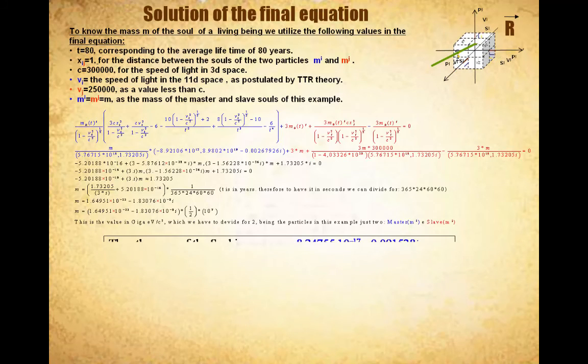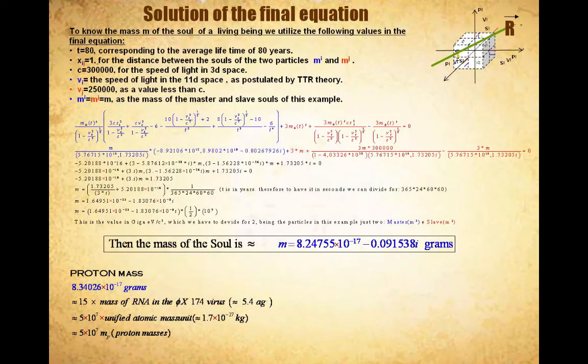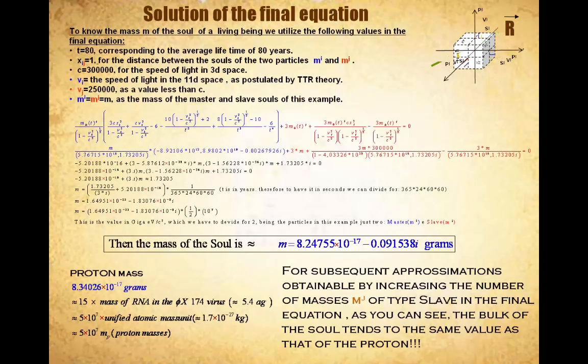Therefore, less than an infinitesimal part of imaginary type, the real component of the complex result is approximately equal to that corresponding to the mass of a proton. Indeed, if in the equation we increase the number of EPI section soul's MJ of slave type, then the imaginary part of this result tends to zero, and the weight of the soul becomes just equal to a real elementary particle of matter, that is the proton.